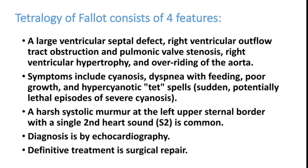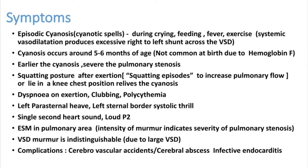Definitive treatment for Tetralogy of Fallot is surgical repair. Many children can have cyanotic spells — episodic cyanosis during crying, feeding, fever, or exercise — all of which produce systemic vasodilation causing excessive right-to-left shunt across the VSD. Cyanosis typically occurs around five to six months, though not common initially because fetal hemoglobin (hemoglobin F) prevents cyanosis formation. Earlier onset of cyanosis indicates more severe stenosis. Squatting episodes are very common as squatting relieves cyanosis. Patients can also have dyspnea on exertion, clubbing, and polycythemia due to chronic cyanosis.